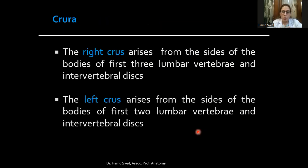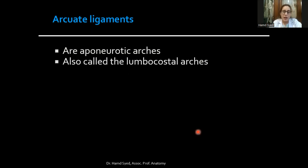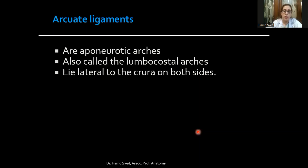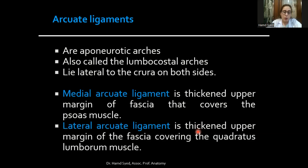The third origin of the diaphragm is from the lumbar vertebrae, in the form of vertical columns or pillars known as crura. The right crus arises from the sides of the bodies of the first three lumbar vertebrae and intervertebral discs, whereas the left crus arises from the first two lumbar vertebrae and intervertebral discs. The right crus is longer and thicker. The origin also includes the arcuate ligaments — the medial arcuate ligament is the thickened upper margin of the fascia covering the psoas muscle, and the lateral arcuate ligament covers the quadratus lumborum muscle.